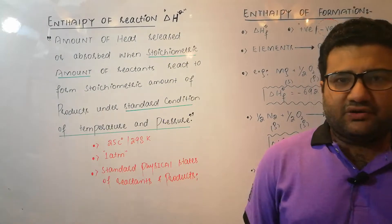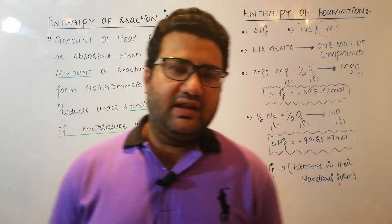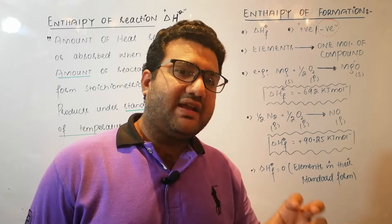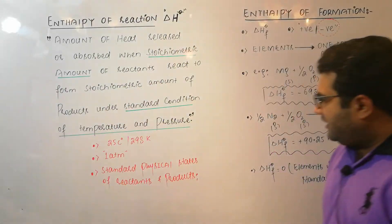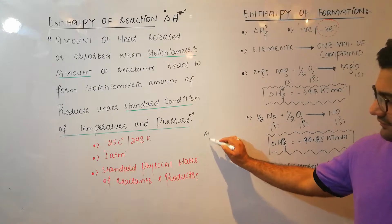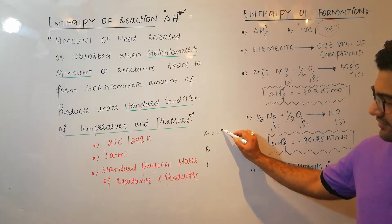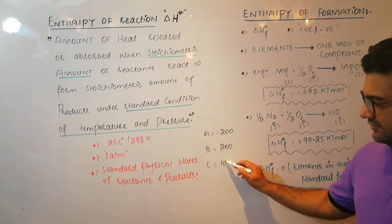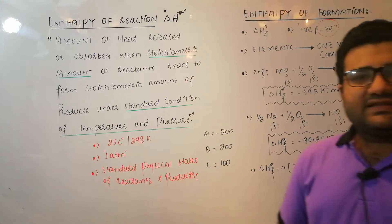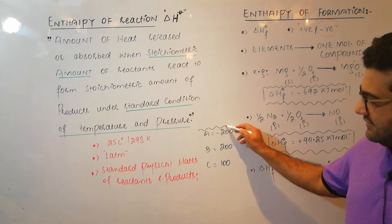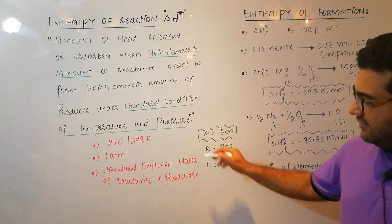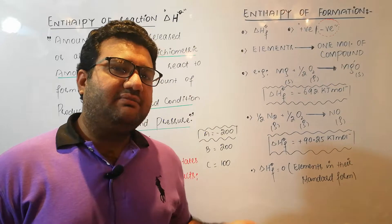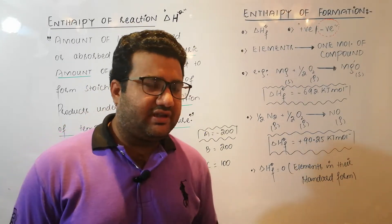If there are several compounds and their enthalpies of formation are given, the question may be which is most stable. That compound will be most stable in which the maximum energy is released. For example, if compound A has ΔHf = −200, compound B has +200, and compound C has +100, then A will show maximum stability. A is most stable because maximum energy is released in its formation, so compound A is at the lowest energy level.